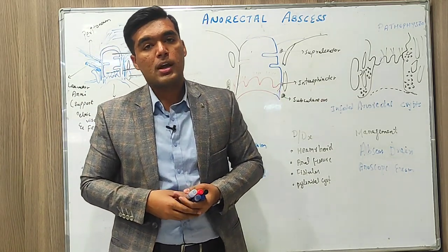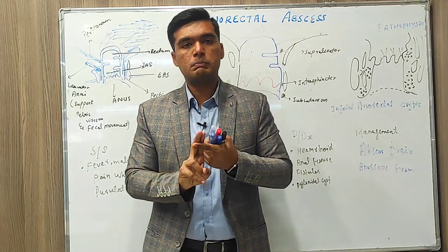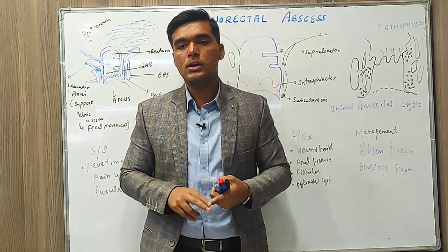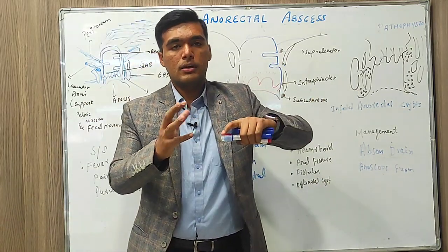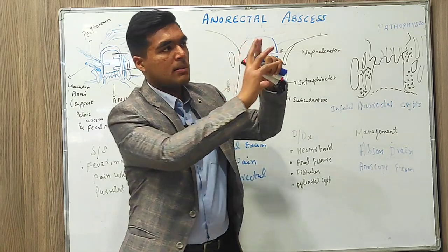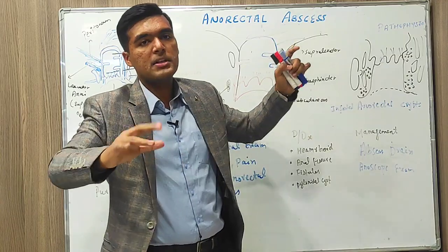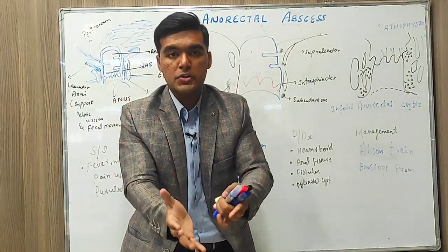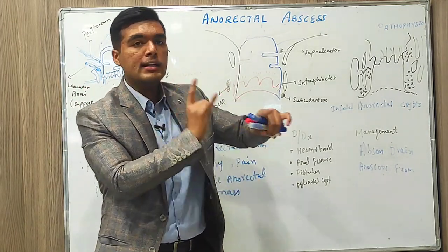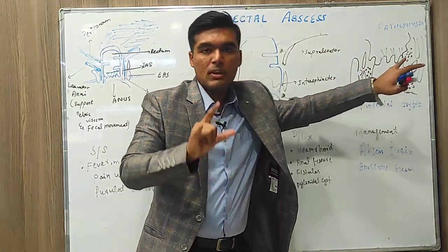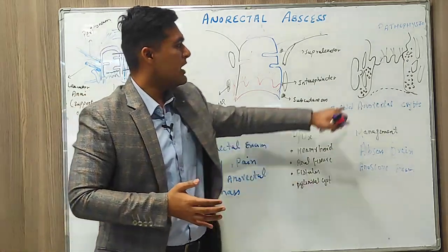Now let us talk about pathophysiology. Just remember one name: crypts. Crypts are very important in pathophysiology. Almost 90% of anorectal abscesses develop from crypts. There may be some damage to the crypt — due to infection, chemotherapy, or drugs like corticosteroids — and that damage leads to further development of anorectal abscesses.